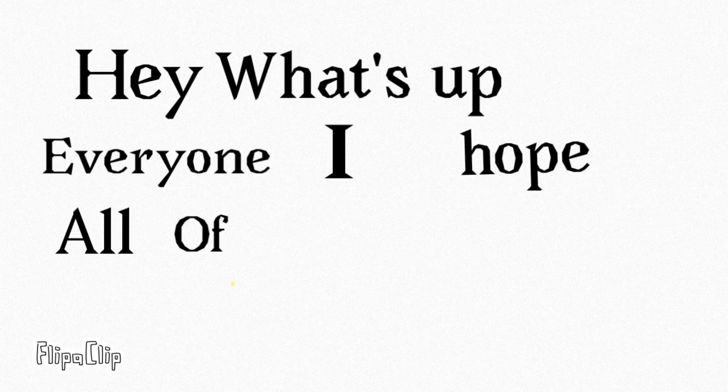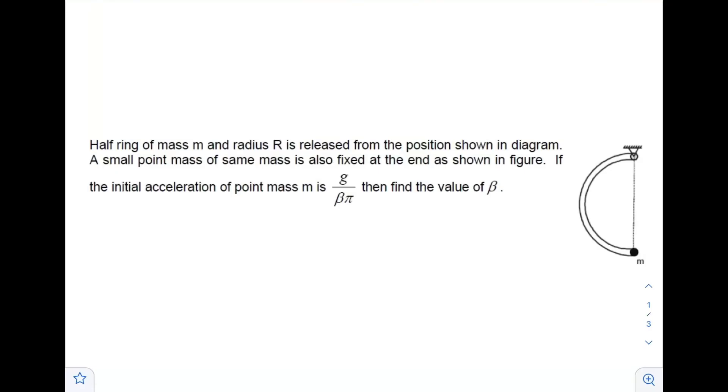Hey, what is up everyone. I hope all of you are doing great. In today's question we have half ring of mass m and radius R released from the position shown in the diagram. A small point mass of same mass is also fixed at the end as shown in the figure. If the initial acceleration of point mass m is g by beta pi, then find the value of beta. So we need to find out the initial acceleration.